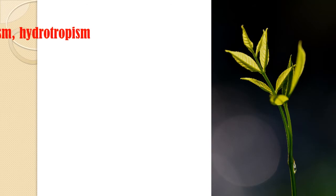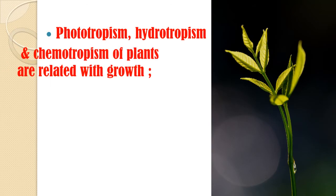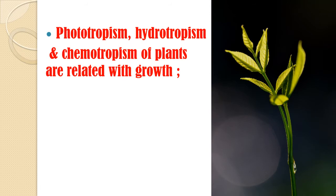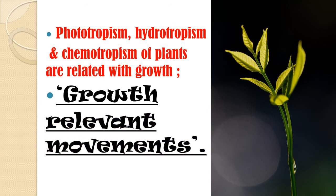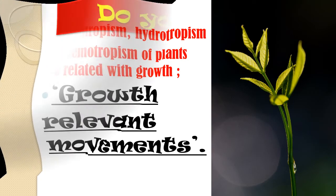Gravitropism, phototropism, hydrotropism, and chemotropism are all movements of plants related to growth — meaning that due to these tropic movements, plant growth takes place. Therefore, collectively they are called growth-relevant movements.